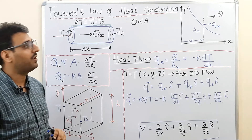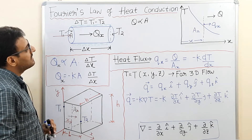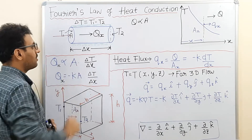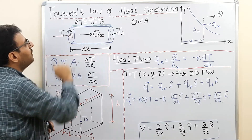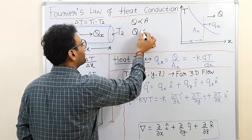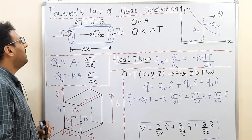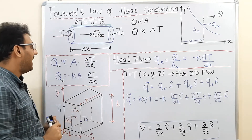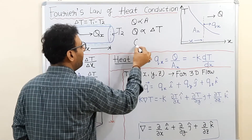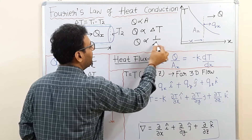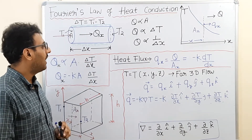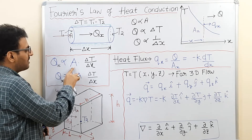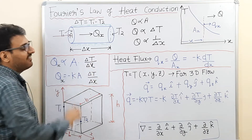We fixed delta T and delta x and varied the cross-sectional area, finding that heat flow rate is directly proportional to cross-sectional area. Similarly, when area and length are constant and temperature difference is varied, heat flow rate is directly proportional to the temperature difference. It is also found that the heat flow rate is inversely proportional to the length of the rod.